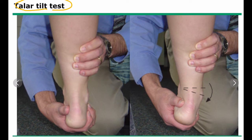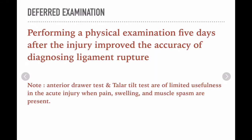The second test is the talar tilt test, which assesses the integrity of the calcaneofibular ligament. With the ankle in neutral position, a gentle inversion force is applied and the degree of inversion is compared to the uninjured side. Note that performing physical examination five days after injury improves accuracy of diagnosing ligament rupture, as the anterior drawer and talar tilt tests are of limited usefulness acutely when pain, swelling, and muscle spasm are present.